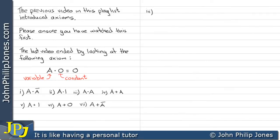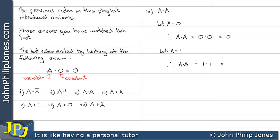Let's have a look at the next example where we have A AND A. Now let A equal zero. Therefore A AND A equals zero AND zero, which obviously gives us a zero. Now let A equal one. Therefore A AND A is one AND one, which gives us a one.